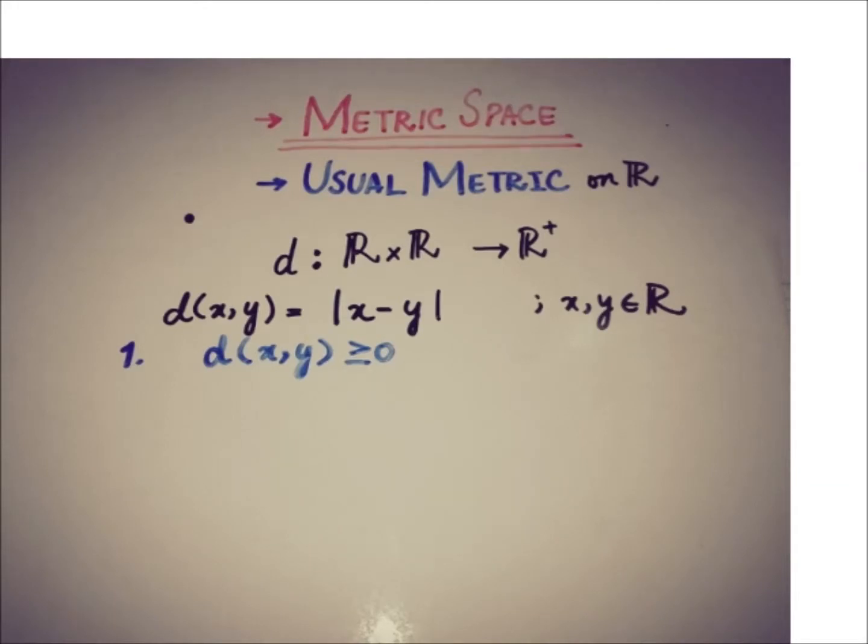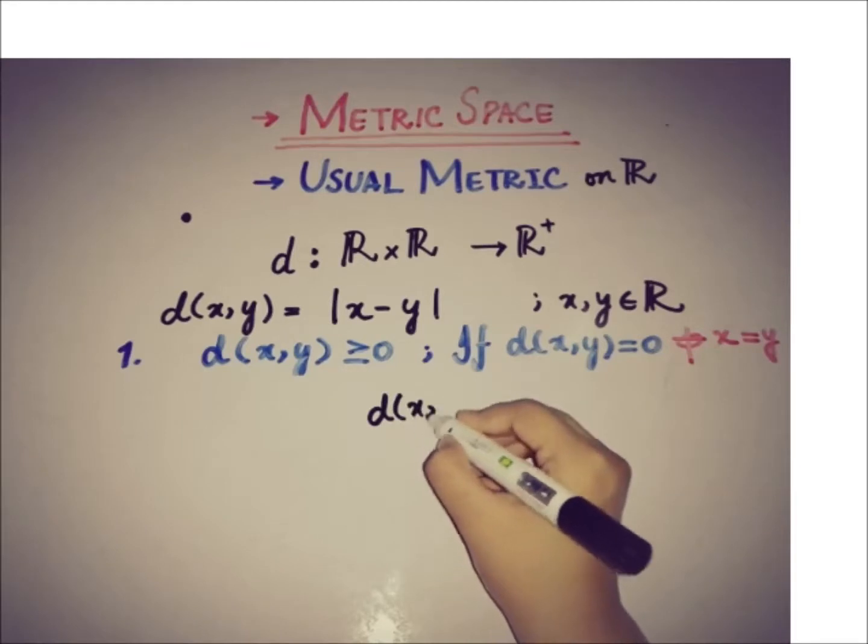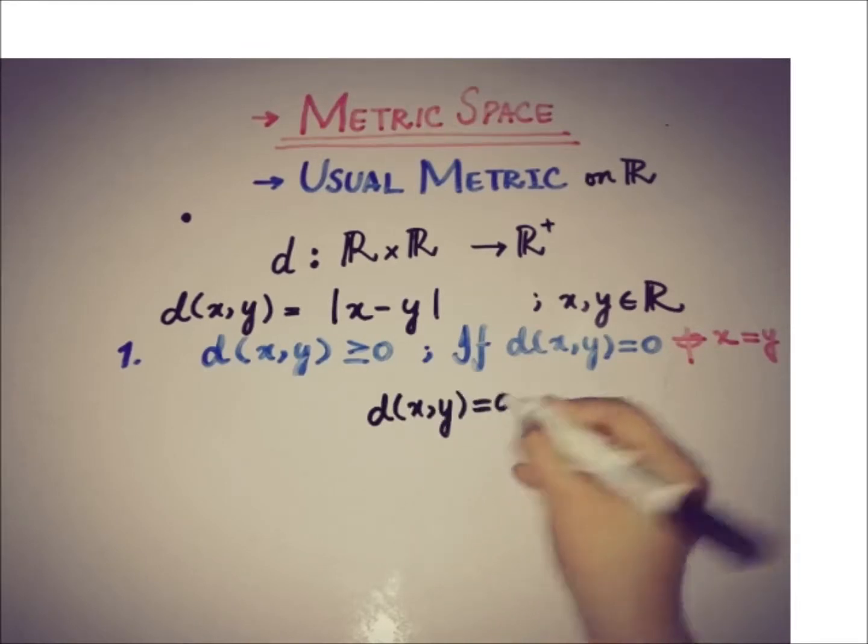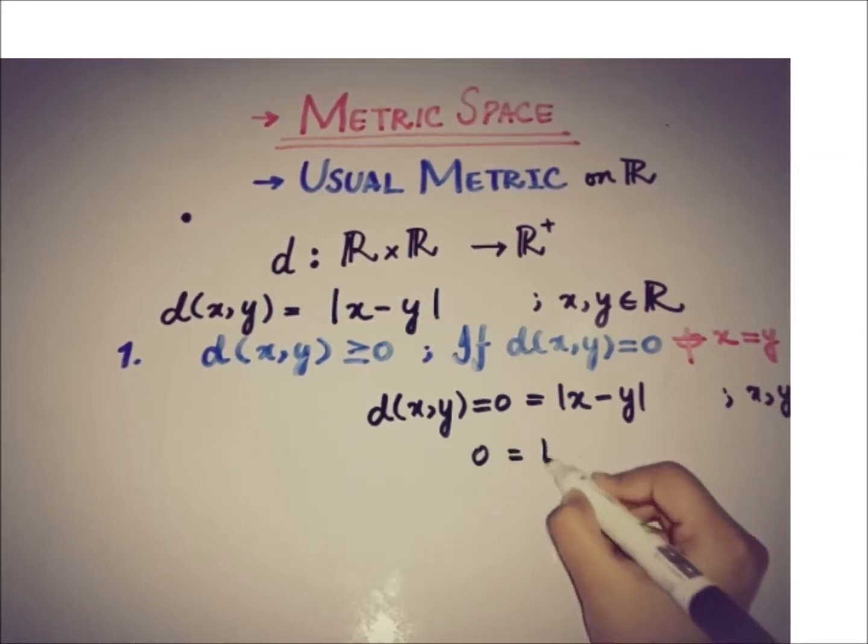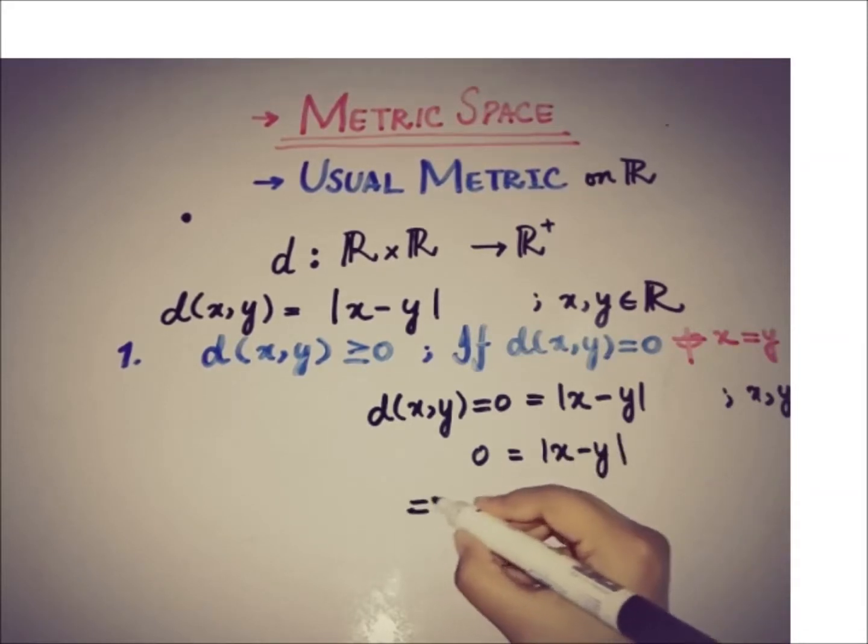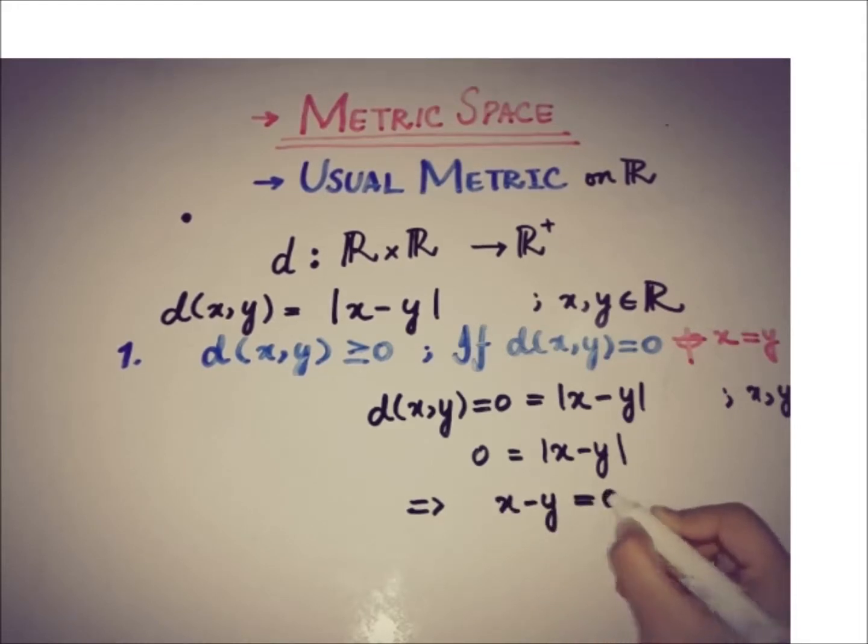And the second part of the first property is that if the metric is equal to 0 then we have to prove that x is equal to y. So given is the metric is equal to 0 and we know that the metric is equal to the absolute value of x minus y where x and y belong to ℝ. So this absolute value of x minus y is equal to 0. This implies that x minus y is equal to 0 and this implies that x is equal to y.